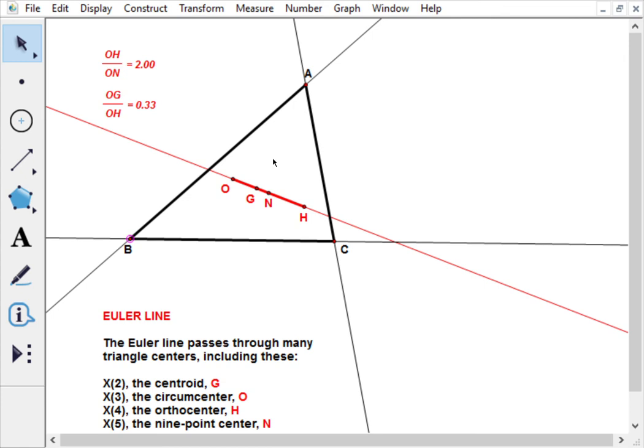That's the Euler line of a triangle. And of course, there are now many, many other points that are known to lie on the Euler line, including this N, which is the nine-point center.